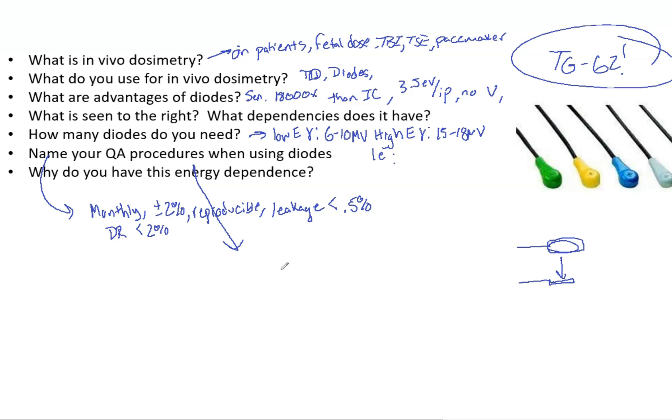There's also an angular dependence due to just the different transmission thicknesses and backscatters, which is why you need to use a cylindrical one for photons and a flat one for electrons. Also field size, there's a field size dependence. So the sensitivity increases with increasing field size.